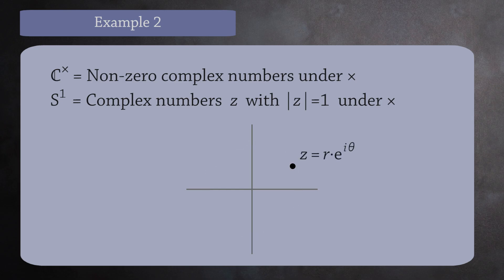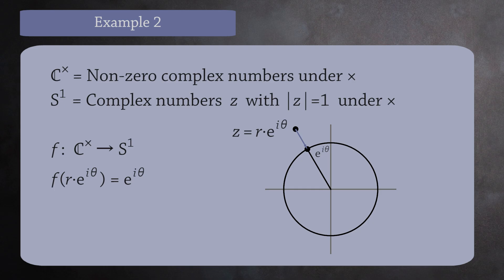Recall that every complex number can be written in polar form as r times e to the i theta, where r is the distance of the complex number to the origin, and theta is how far you have to rotate from the positive x axis to reach the complex number. With this setup, we can now define a homomorphism between these two groups. The function is f of r times e to the i theta equals e to the i theta. You can visualize this by taking any non-zero complex number z, drawing your ray from the origin to z, and mapping z to the point where it intersects S¹. But is this a homomorphism?